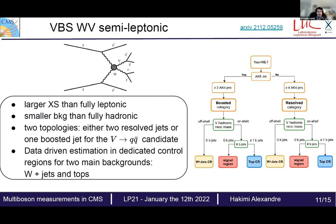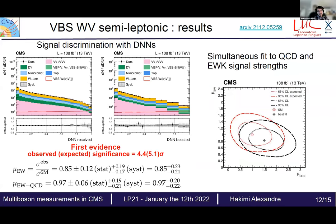The second VBS result is semi-leptonic WV production. Semi-leptonic is interesting because it has a larger cross-section than fully leptonic but a smaller background than fully hadronic. Two topologies are considered depending on whether the jets from the hadronic V decay are resolved into two jets or one large boosted jet. W plus jets and top backgrounds are estimated data-driven, and signal is extracted with deep neural networks. We find the first evidence for this channel with an observed significance of 4.4 sigma and signal strengths in agreement with the standard model.